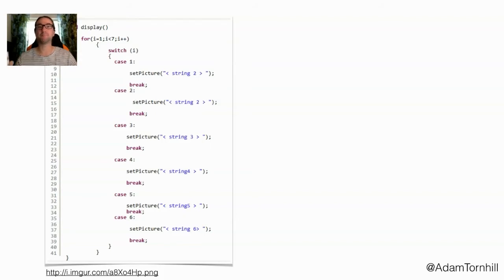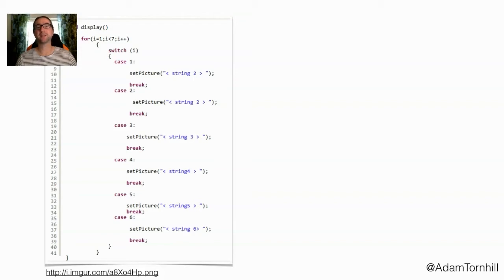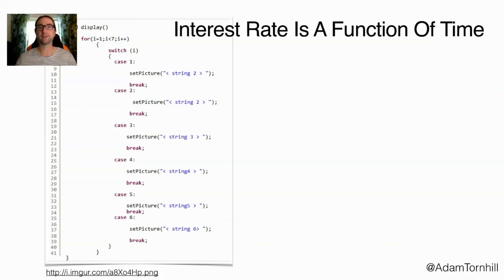And of course, we would never write something like this ourselves. But is it a problem? More importantly, is it technical debt? The thing is, from code alone we just cannot tell. The reason we cannot tell is because it's not technical debt unless we have to pay interest on it. And interest rate is a function of time, meaning that if we want to decide if this code is technical debt or not, we will need a time dimension into our code.